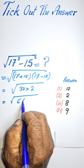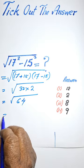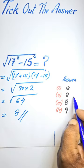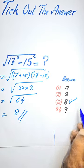The square root of 64 is 8, so the answer is 8.